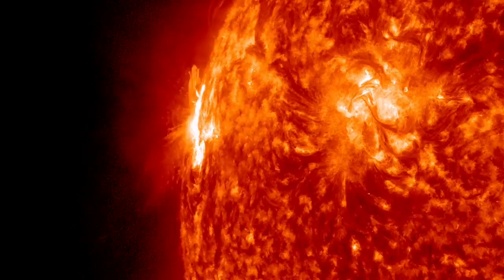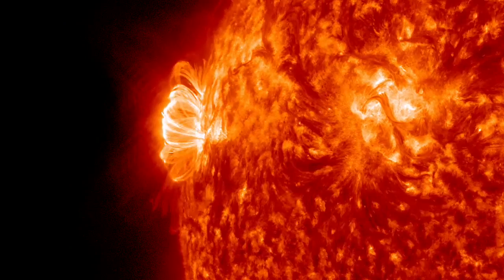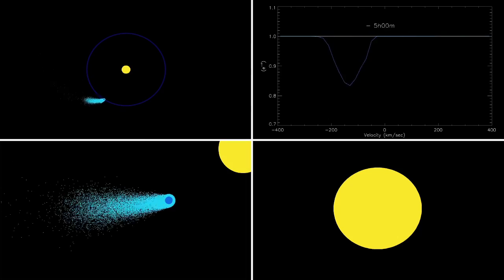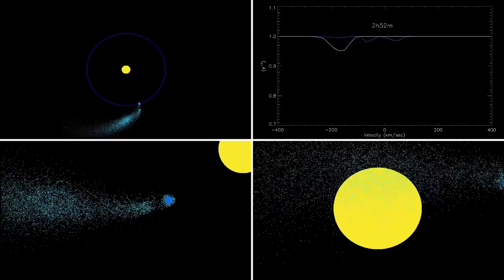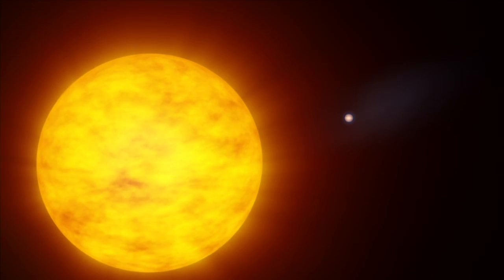Similar flares happen frequently on the Sun. But because the planet is so big and so close to its star, this X-ray blast had an outsized effect, heating the planet's atmosphere and sweeping away 1,000 tons of gas each second. The escaping gas gave the planet a comet-like tail.